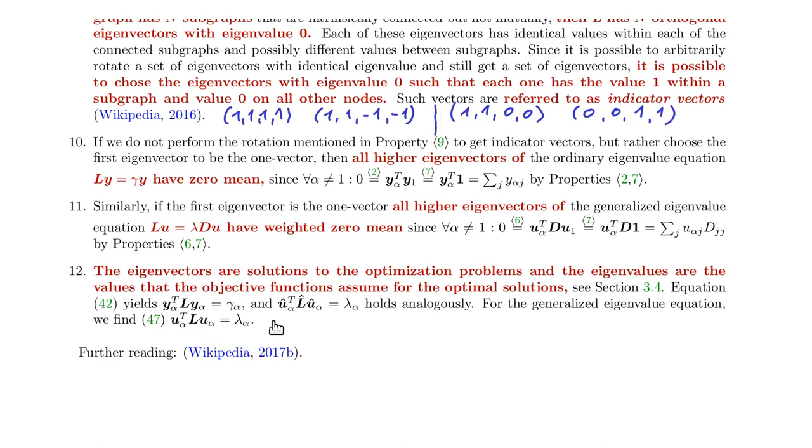And the eigenvalues are actually the value of the objective function. So that's very convenient. This is a sort of relationship that you might know from principal component analysis, where you also want to minimize the reconstruction error, and that corresponds to the eigenvectors with the largest eigenvalues in that case. But this correspondence between the quadratic optimization problem and eigenvalue equation, you can also see in principal component analysis.